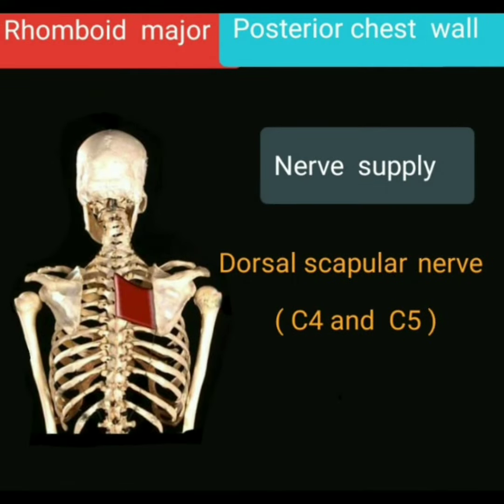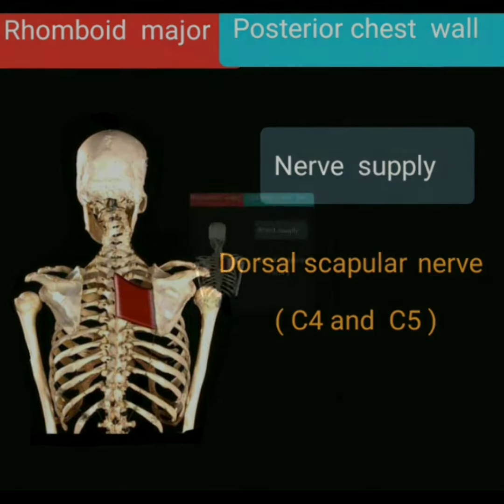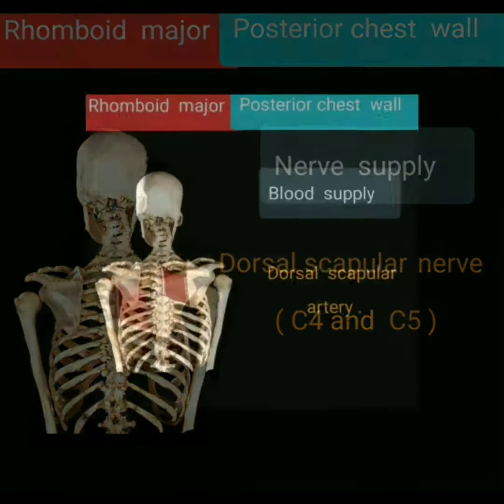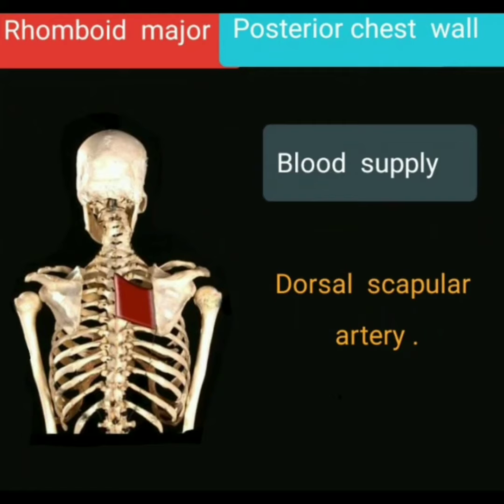Nerve supply: the rhomboid major muscle is supplied by the dorsal scapular nerve, with root values cervical 4 and cervical 5. Blood supply: the rhomboid major muscle is supplied by the dorsal scapular artery.